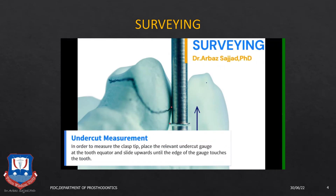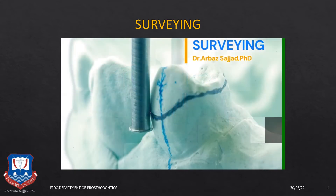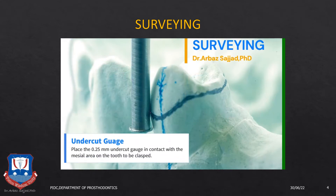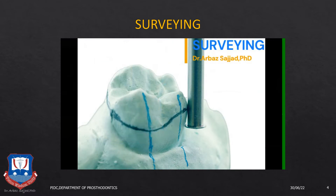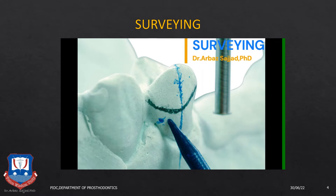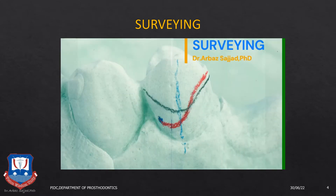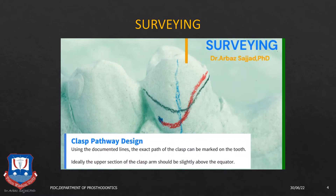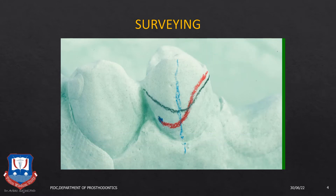The first step in RPD designing or designing for a CPD is the surveying. In surveying, the undercuts are first measured to decide which type of clasp tip or clasp assembly you're going to give. Usually for a cast partial design, undercuts of 0.25 mm are sufficient to provide cast assemblies. The maximum height of contour of the tooth is marked, followed by designing of the path of insertion where the clasp is going to engage the undercut and cross over the maximum convexity of the tooth on the abutment teeth.